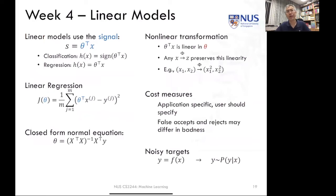In week four, we looked at linear models. Linear models are the most simple models which use the signal, which is basically the weight vector times the actual data instance. We saw that classification can do this by taking the sign of this signal. Positive weighted signals would equal a positive classification, and vice versa.